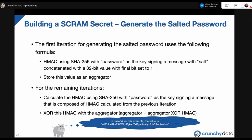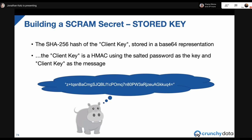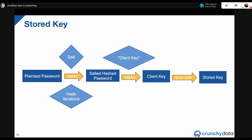From the salted password we build the stored key — the fourth element in the SCRAM verifier. The stored key is the SHA-256 hash of the client key, stored in base64 representation. The client key is an HMAC using the salted password as the key and the literal string 'client key' as the message. So the flow is: plain text password → PBKDF2-type function → salted hash password → HMAC with 'client key' → client key → SHA-256 hash → stored key.